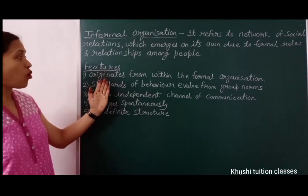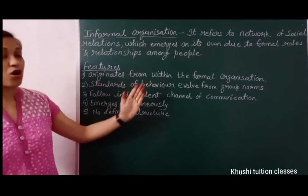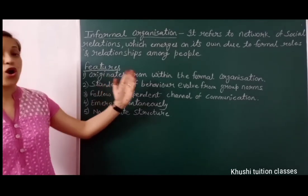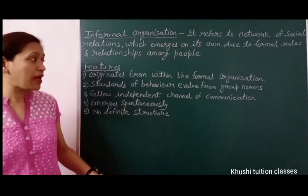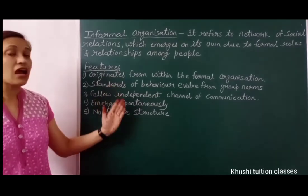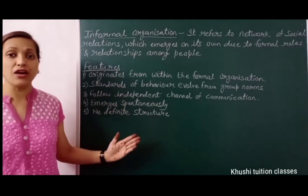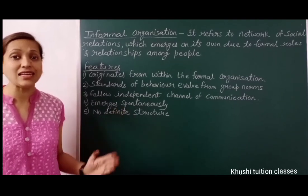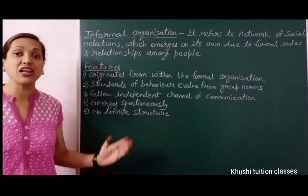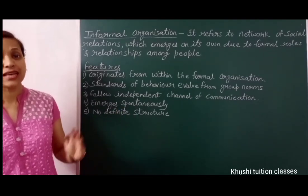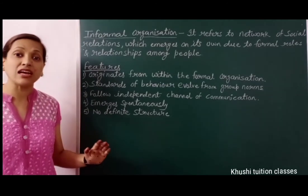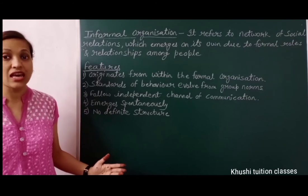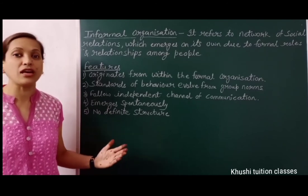Now we see features of informal organization. The first is that it originates from within the formal organization. These informal groups are a part of the formal organization that has created itself automatically, because these employees have social needs, and their nature, likings, hobbies, and ways of working are the same, or their opinions match — so friendship develops among them.